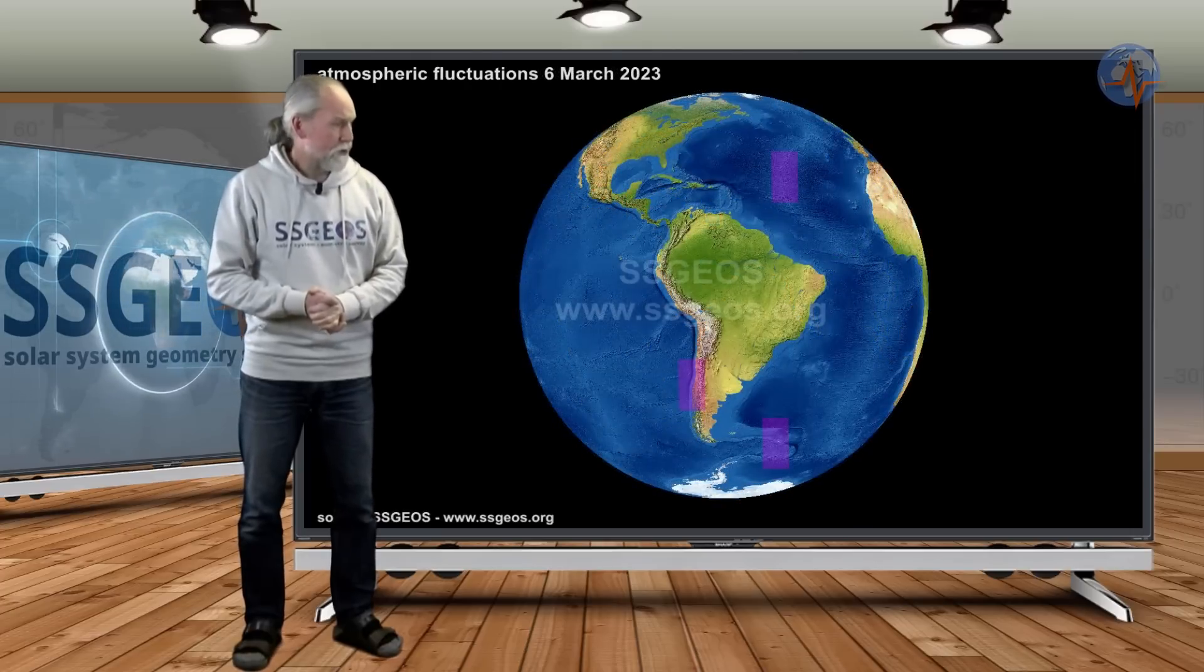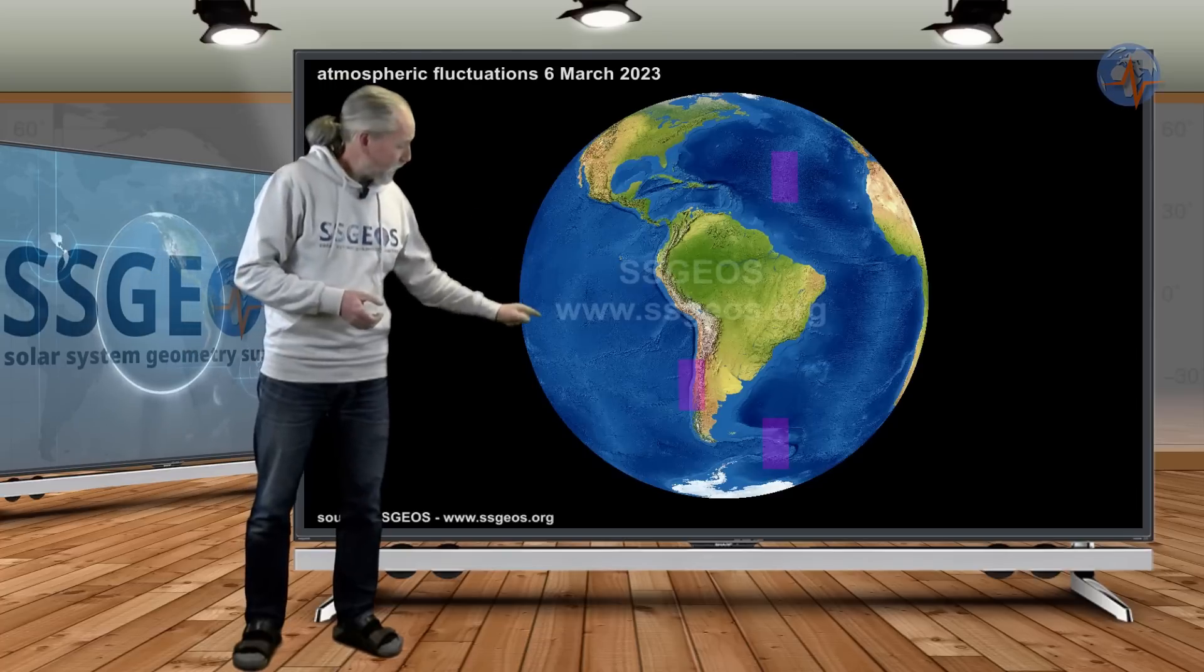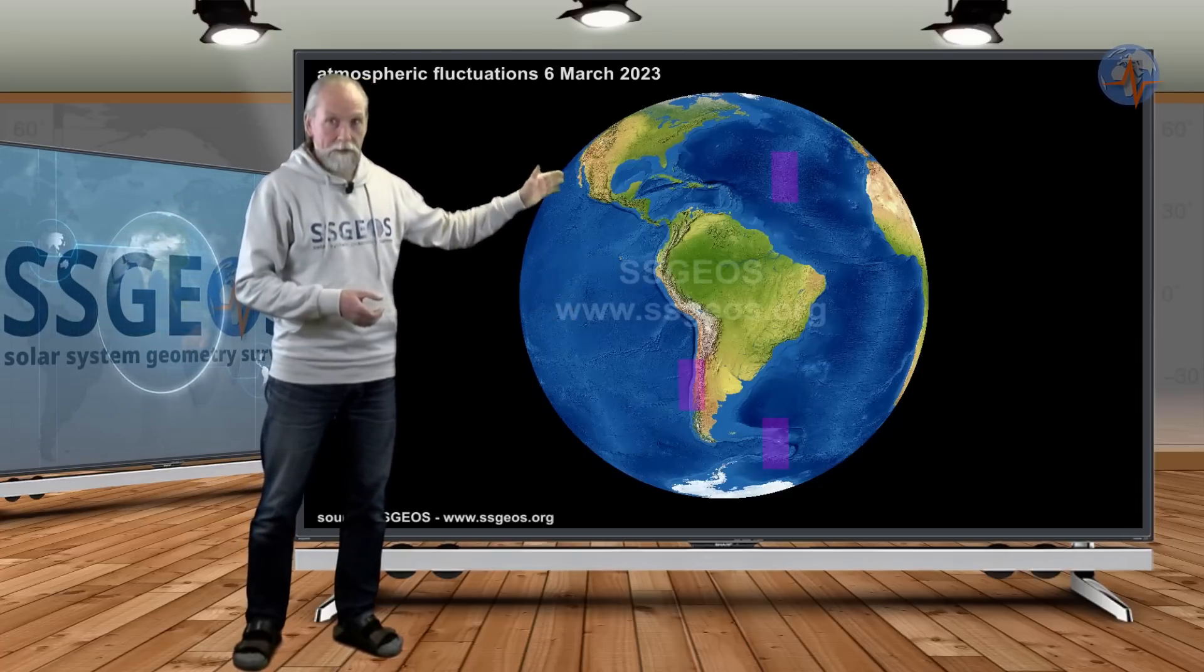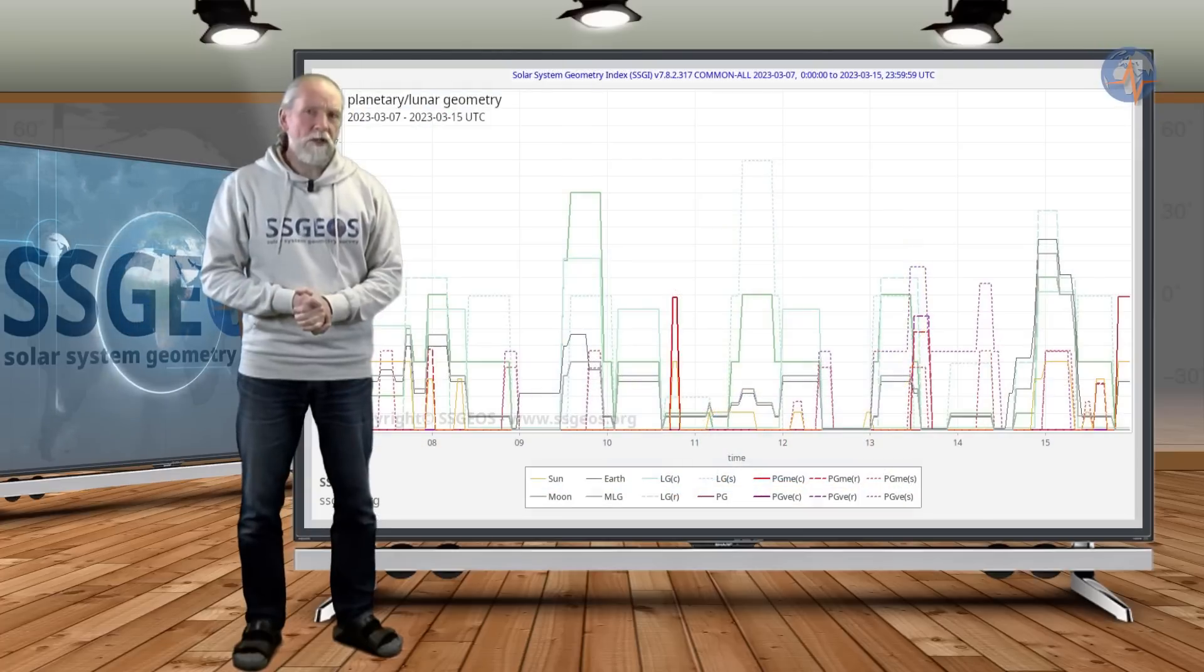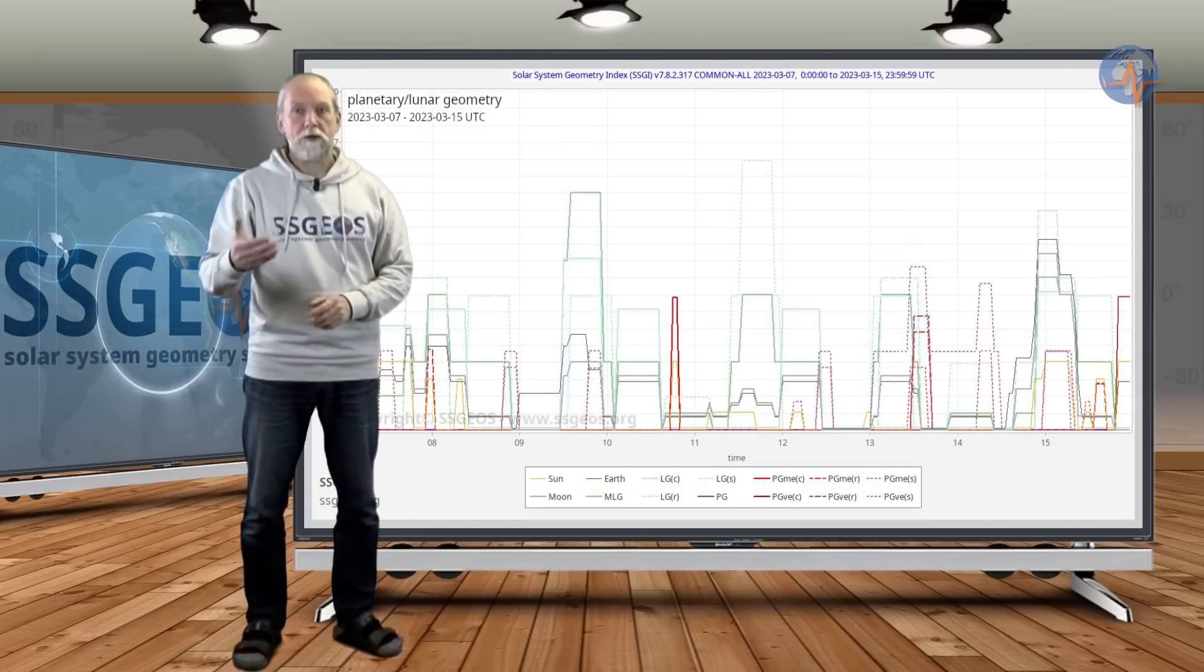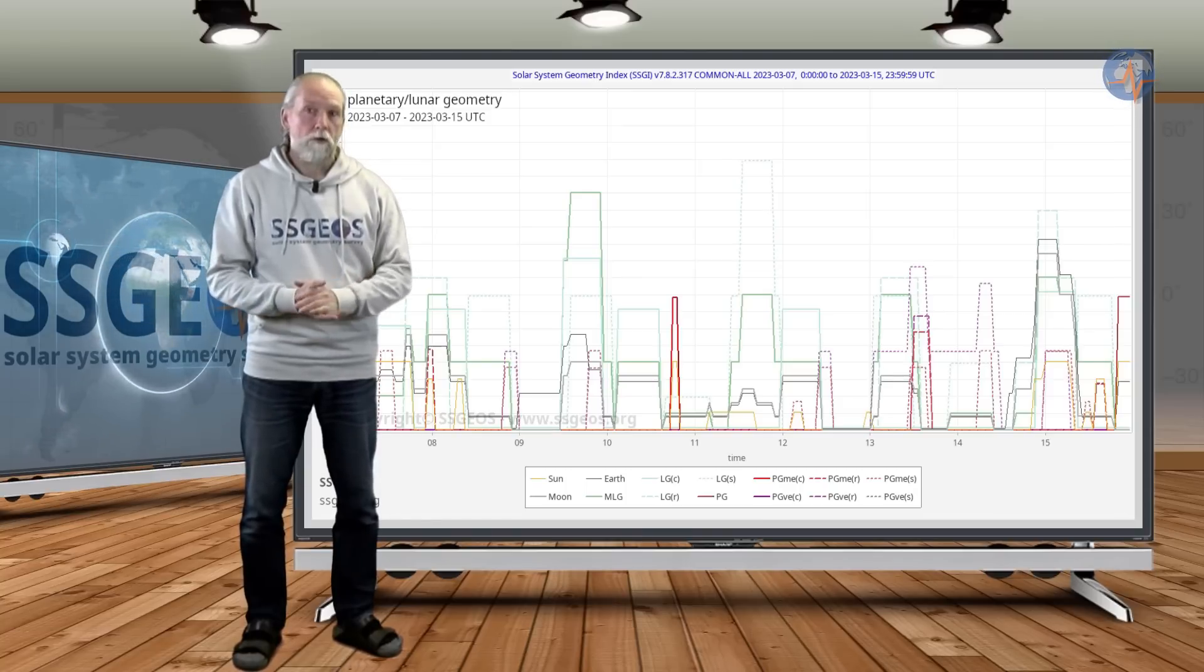And then on the sixth, just two days ago, we had fluctuations marking Chile and also the South Sandwich Islands region and the mid-Atlantic ridge. These fluctuations could become significant in the next few days, especially after the lunar conjunction with Jupiter, so that would be the 11th, around the 11th of March.